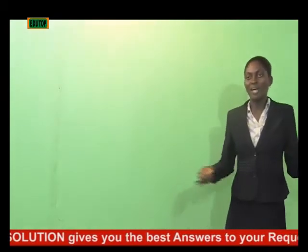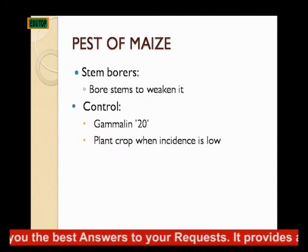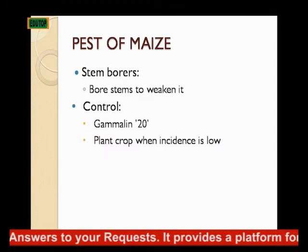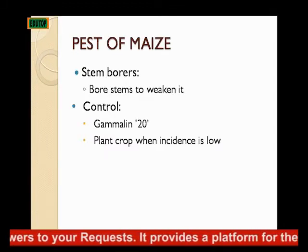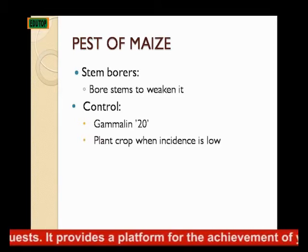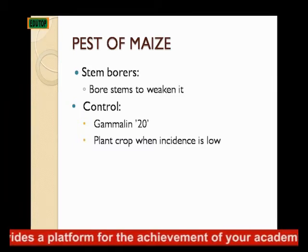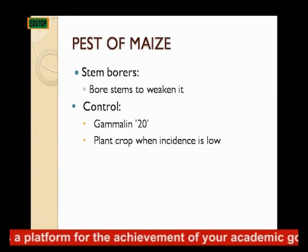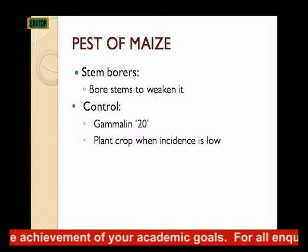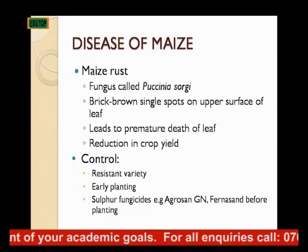The pest of maize is stem borers. This pest bores into the stem of maize and causes it to weaken. You can control stem borers of maize by applying Gamalin 20. Then you can plant the crop when the incidence of such stem borers is low.